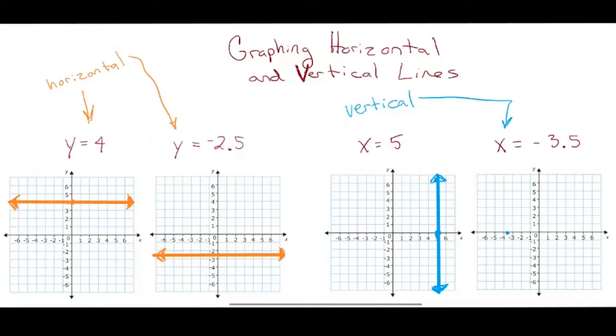Then I get my straight edge, and I draw my line through the negative 3.5, and I put arrows on either end to show that it goes on forever. And that's how you graph horizontal and vertical lines.